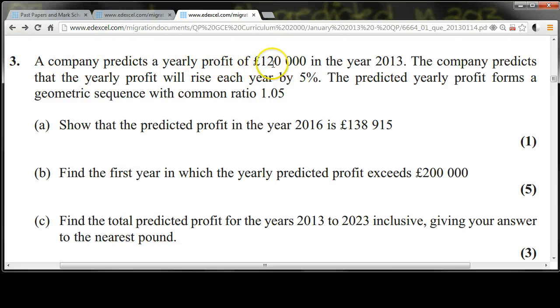A company predicts a yearly profit of £120,000 in the year 2013. The company predicts that the yearly profit will rise each year by 5%. The predicted yearly profit forms a geometric sequence with common ratio 1.05.